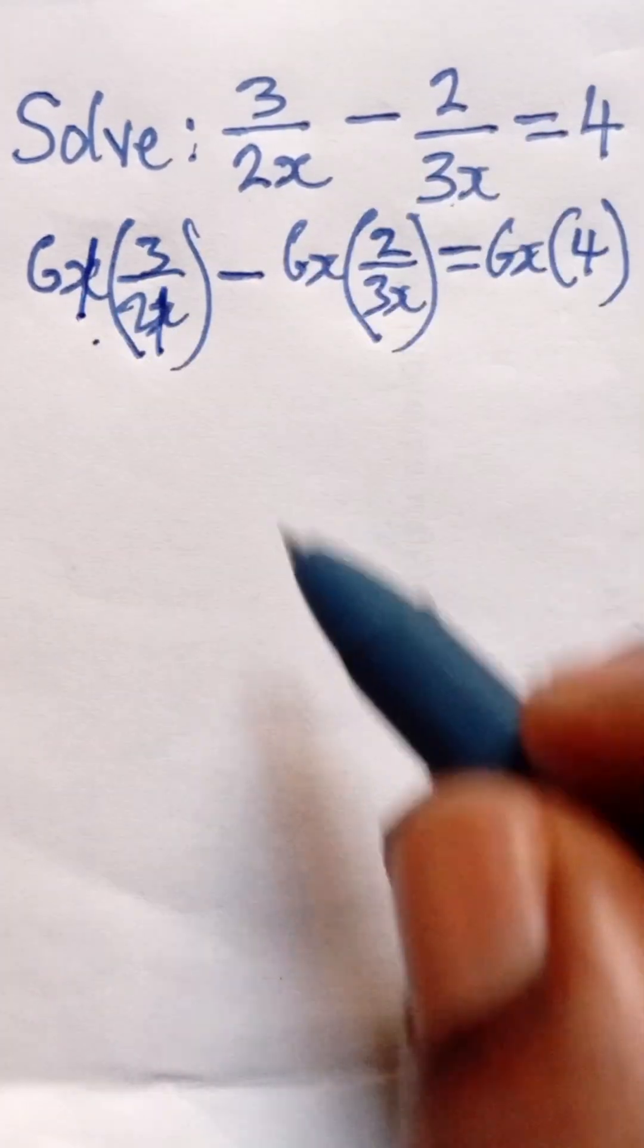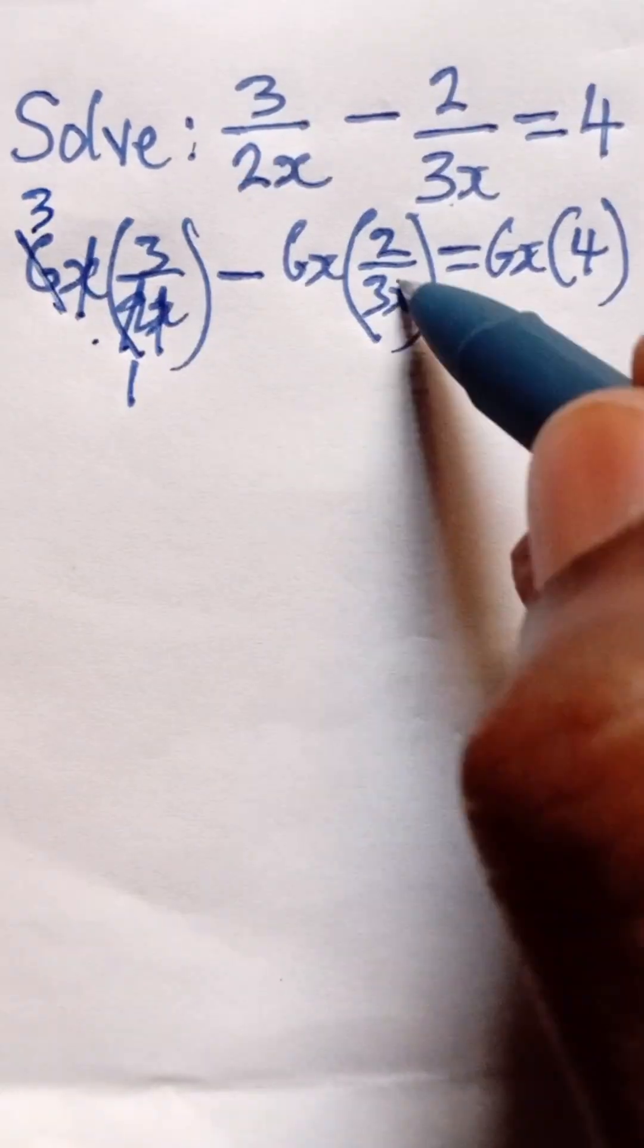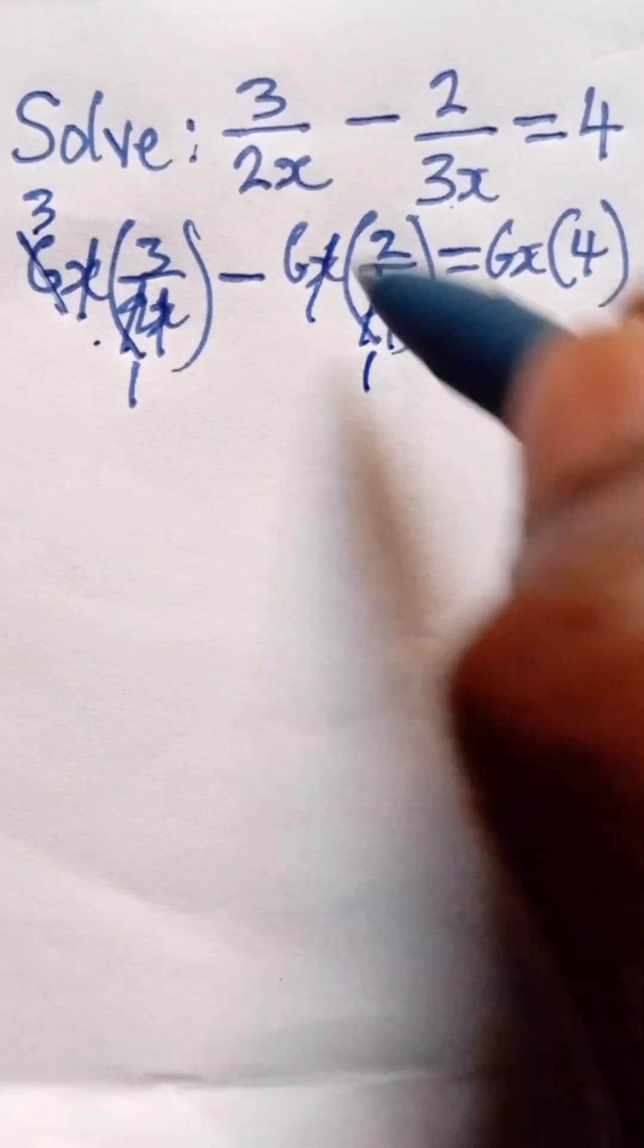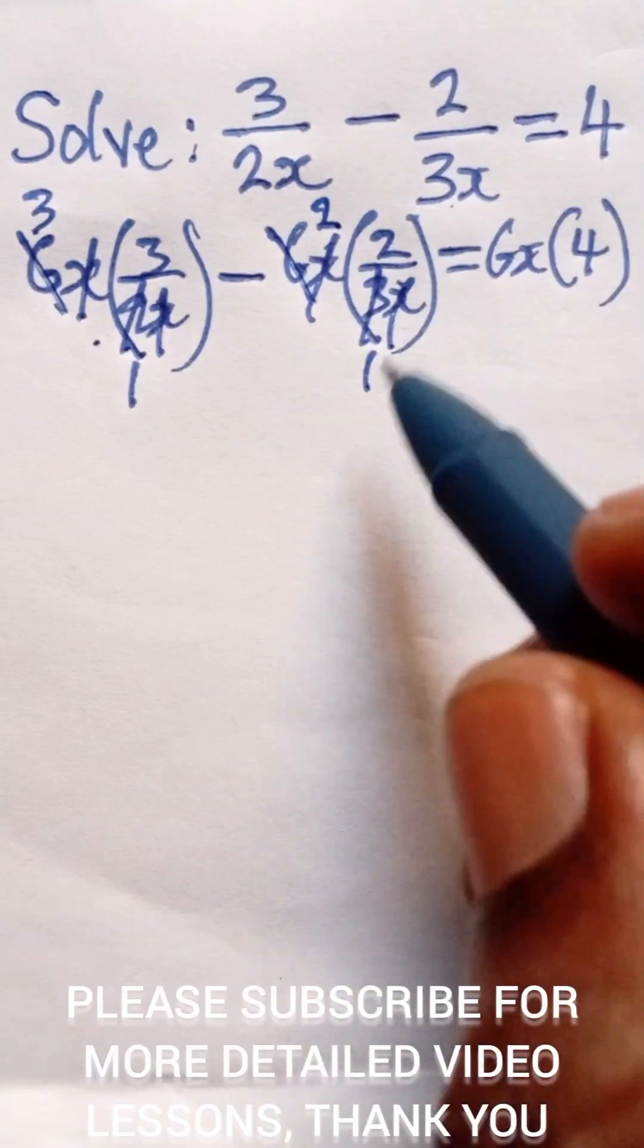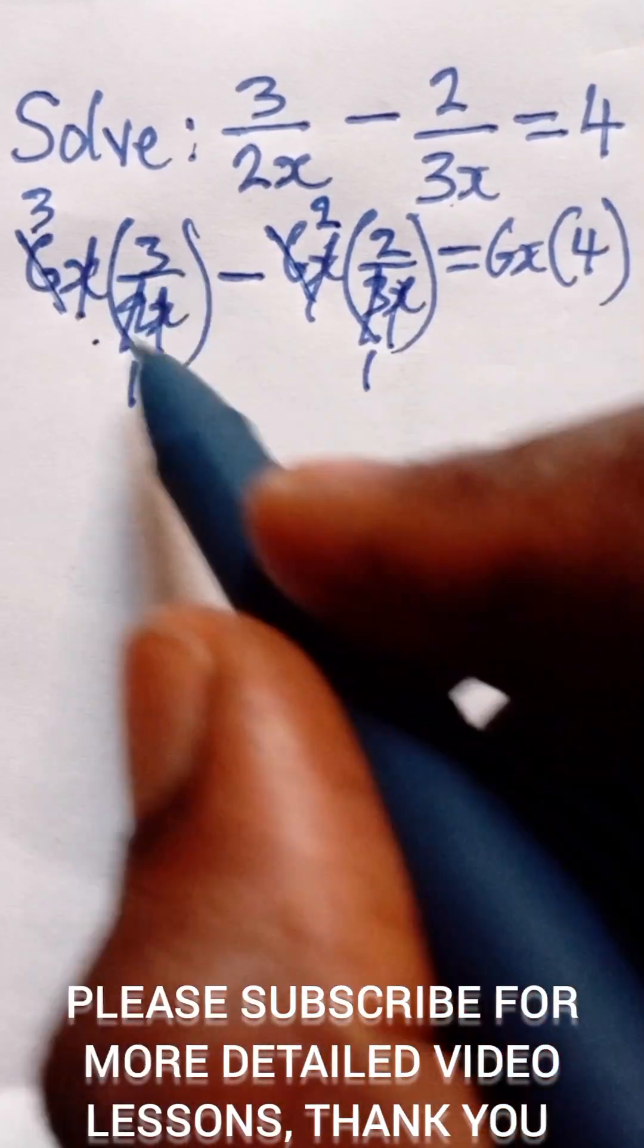Now we can simplify. We cancel x here and 2 here, 1, 2 here, 3. We also cancel x here, 3 here, 1, 3 here, 2. We can now simplify and say 3 multiplied by 3 is 9 minus 2 multiplied by 2 is 4, and that will be equal to 6x multiplied